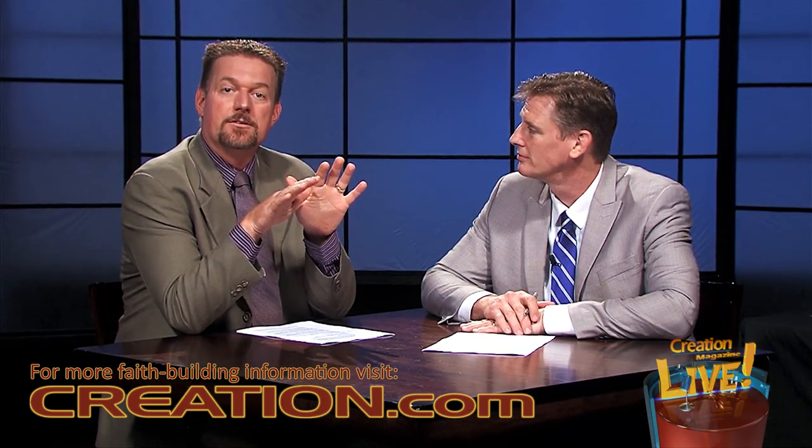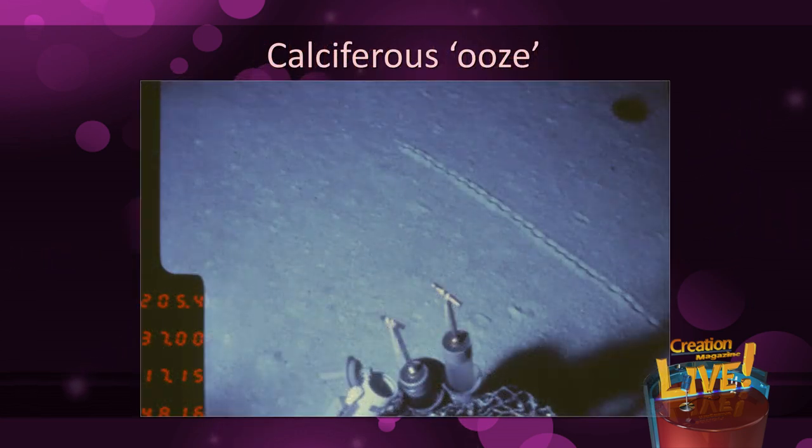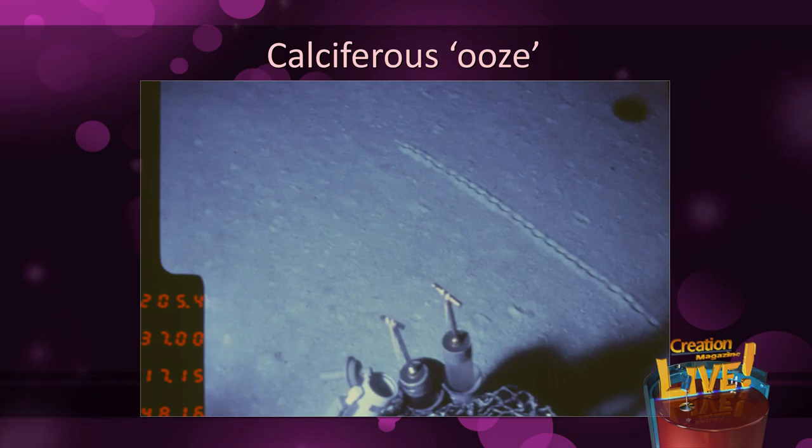Most geologists believe the present is the key to the past. So if chalk is made up of accumulated microorganisms, then logically look to see where such microorganisms live today and how and where their remains accumulate. The deep sea sediments on the ocean floor today have an average thickness of about 450 meters, and it's on the deep ocean floor that the purest calcium carbonate–rich ooze has accumulated. About half of the deep ocean floor is covered by light-coloured calcareous ooze, generated down to a depth of about 4,500 to 5,000 meters. Geologists believe these oozes form as microorganisms die, with calcium carbonate shells falling slowly down to accumulate on the ocean floor. Slow accumulation is how most geologists believe these chalk beds originally formed.